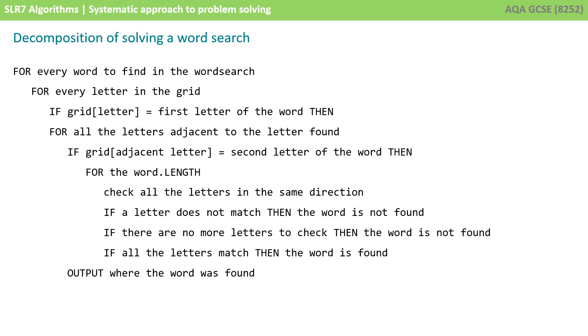So, here is an outline algorithm for solving the word search. For every word to find in the word search, we need to check every letter in the grid. If the letter in the grid equals the first letter of the word, then, for all the letters adjacent to the letter found, check if the adjacent letter in the grid is equal to the second letter of the word.